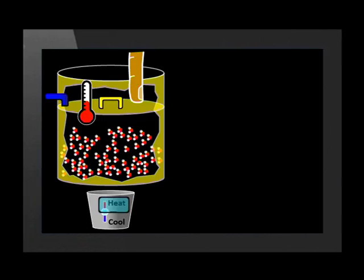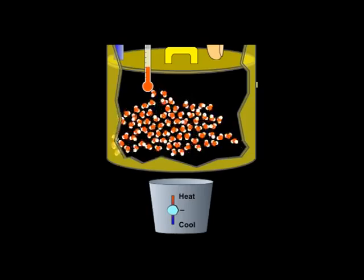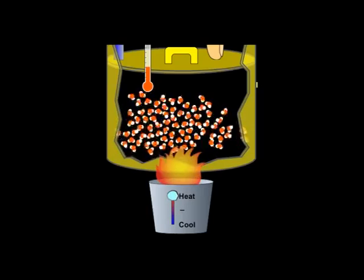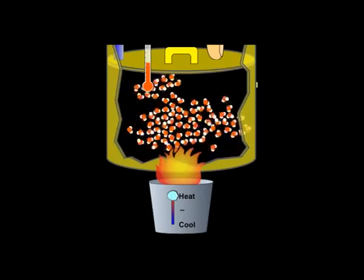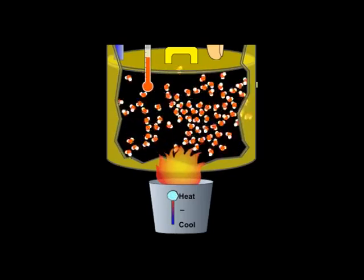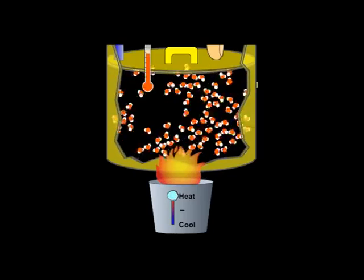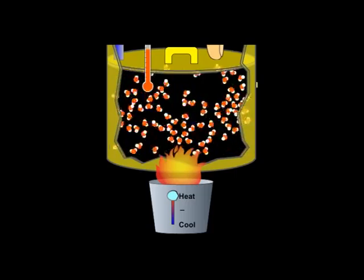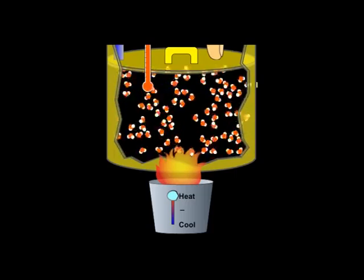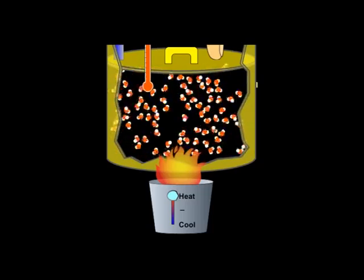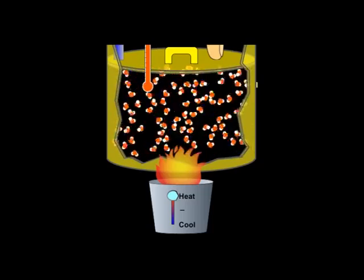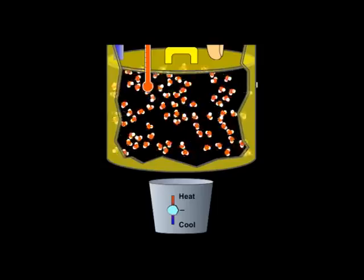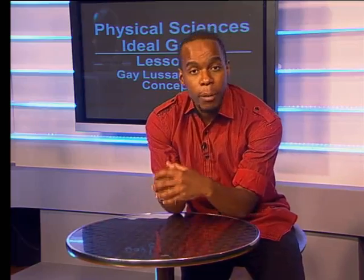The increase in temperature increases the kinetic energy of the molecules. Notice how they move around faster and faster on average as we heated the gas. Notice how the thermometer's measurement rises — this shows that there is an increase in temperature. Remember that the gas pressure is related to the rate at which the molecules collide with the walls of the container. Let's watch the simulation again.